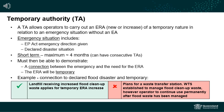A temporary authority allows operators to carry out an environmentally relevant activity or ERA which is temporary in nature and must be in relation to an emergency situation. A temporary authority can be for a new ERA or it can be for an increase to the ERA threshold that an operator currently has on their environmental authority.